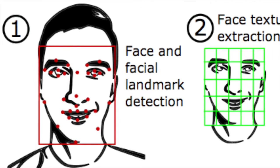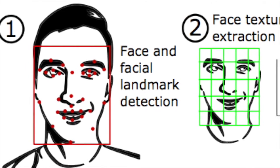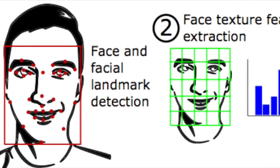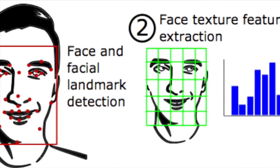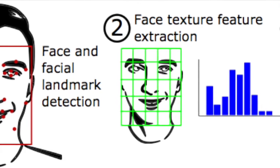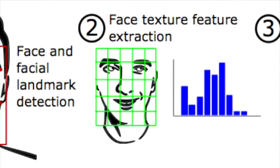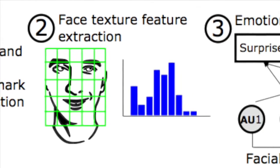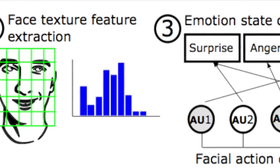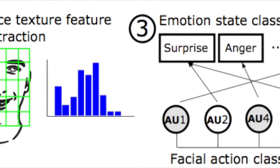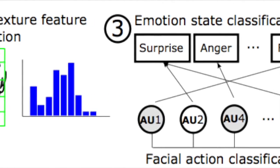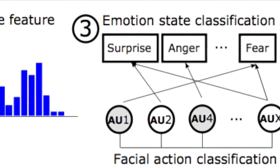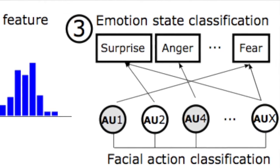Using computer vision techniques, we detect and track features on the face, analyse the appearance and identify the facial actions present. From these, we infer the emotional state of each person in real time.